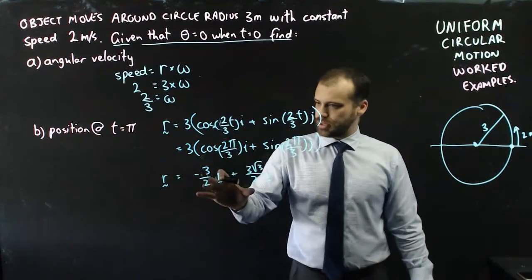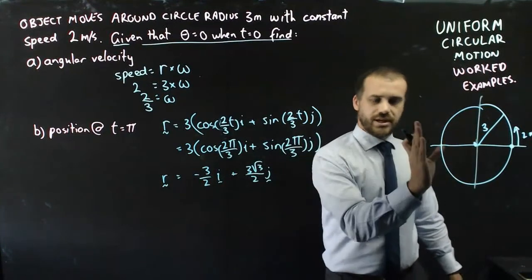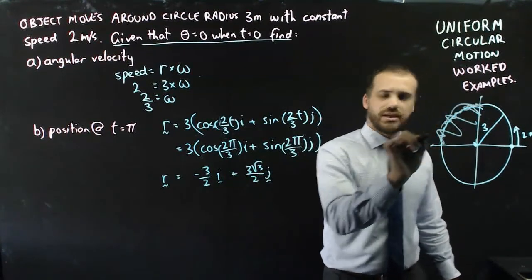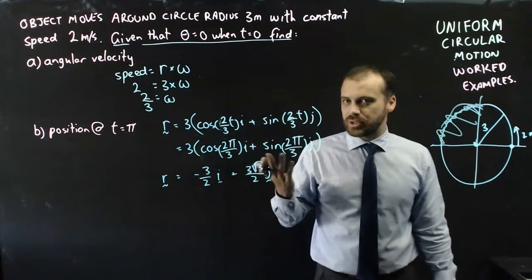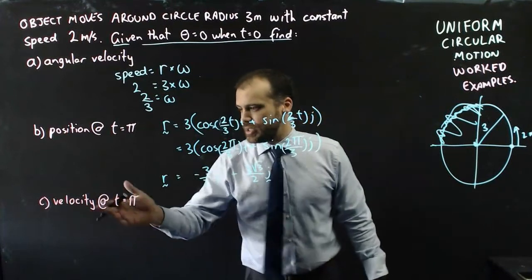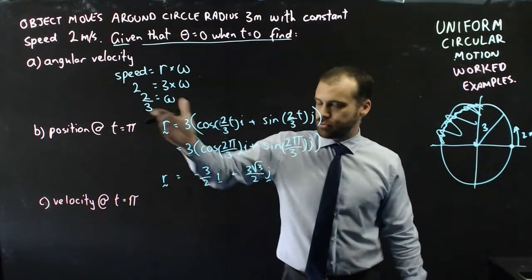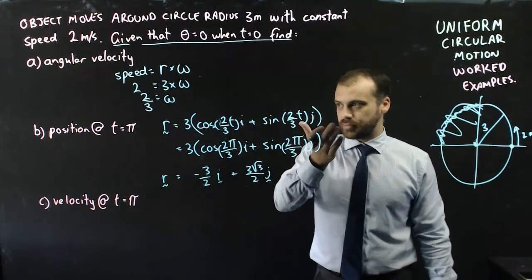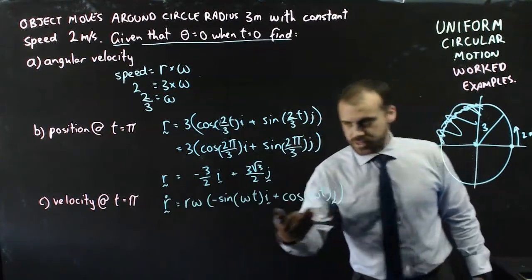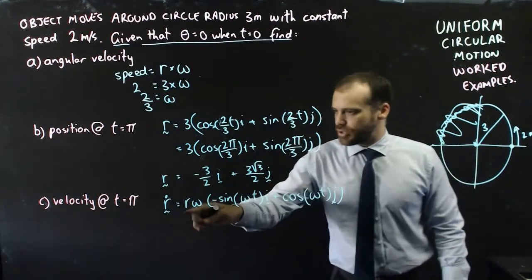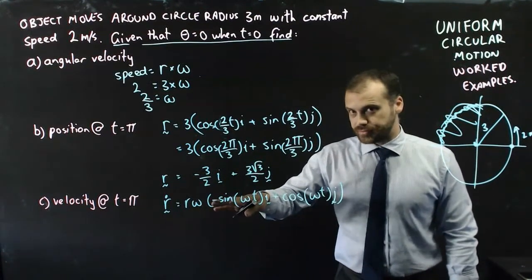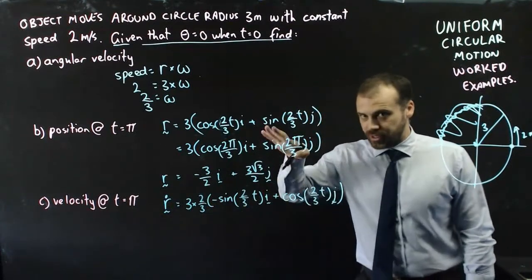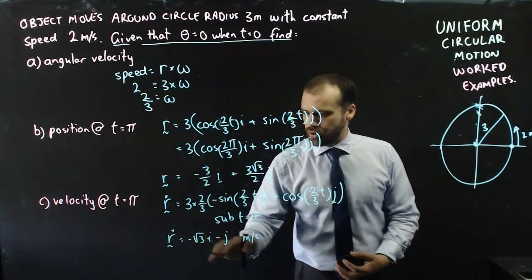Looking at our circle, the position at t equals pi has a negative i value, so it's in the left half of the circle, and a positive j value — so it's in the second quadrant. Part c asks for the velocity at t equals pi. We differentiate the displacement function to get the standard velocity function for uniform circular motion, substitute in the radius and omega, then sub in pi. We get negative root 3 i minus j.